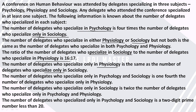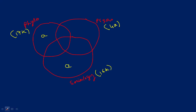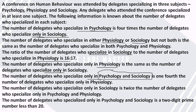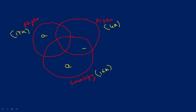The number of delegates who specialized only in psychology and sociology — meaning just this intersection region — is the same as the number of delegates who specialized only in physiology, which is one-fourth of that value.